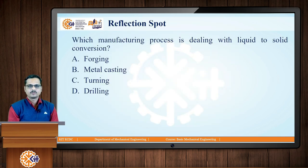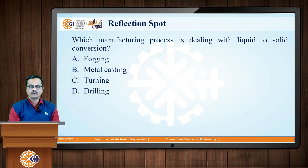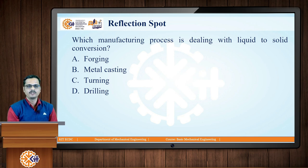Now, for a reflection spot question to summarize: which manufacturing process deals with liquid-to-solid conversion? Option A is forging, Option B is metal casting, Option C is turning, and Option D is drilling. Please think over this and identify the correct answer. The correct answer is metal casting, which deals with getting finished or semi-finished components through liquid-to-solid conversion, because we pour liquid molten metal into a mould cavity and after solidification we get the casted components.